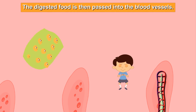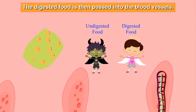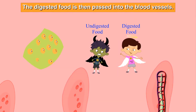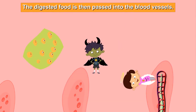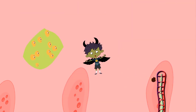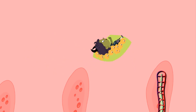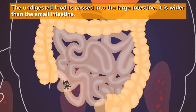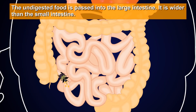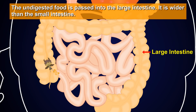The inner surface of the small intestine has finger-like projections called villi. The villi have an extensive network of blood vessels. The digested food is then passed into the blood vessels.